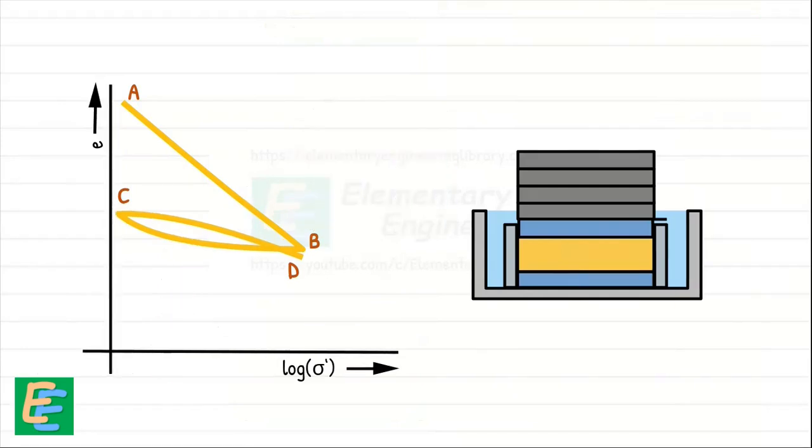However, we observe that a reloaded specimen has a slightly lower void ratio at point D than it did at point B during the initial compression for the same load. When further load is applied to the sample, the curve merges smoothly into the straight line and continues as an extension of the first loading curve AB.